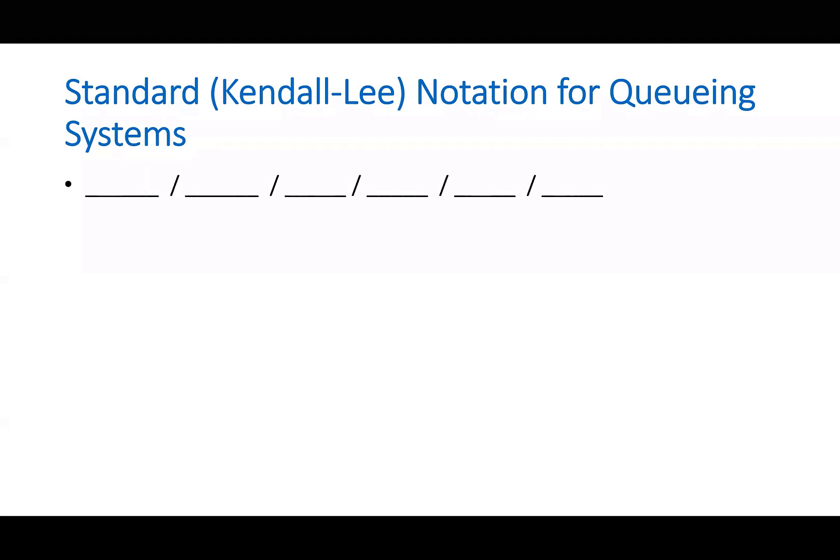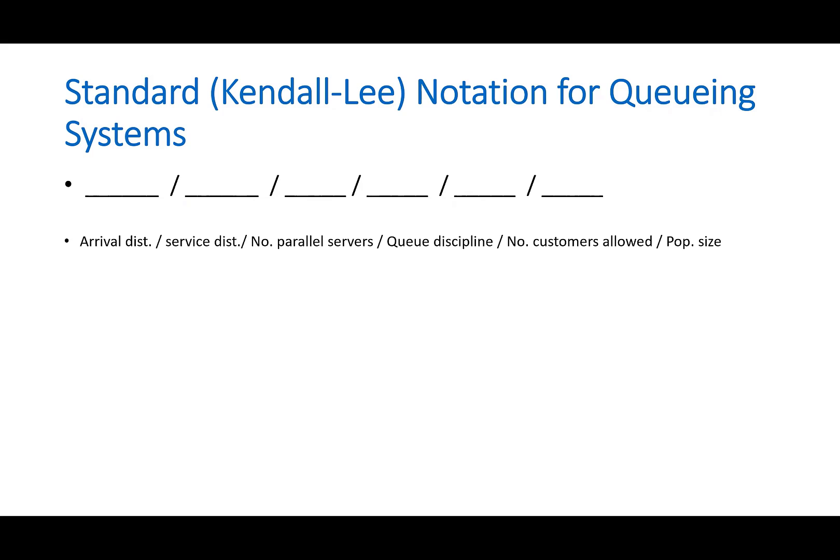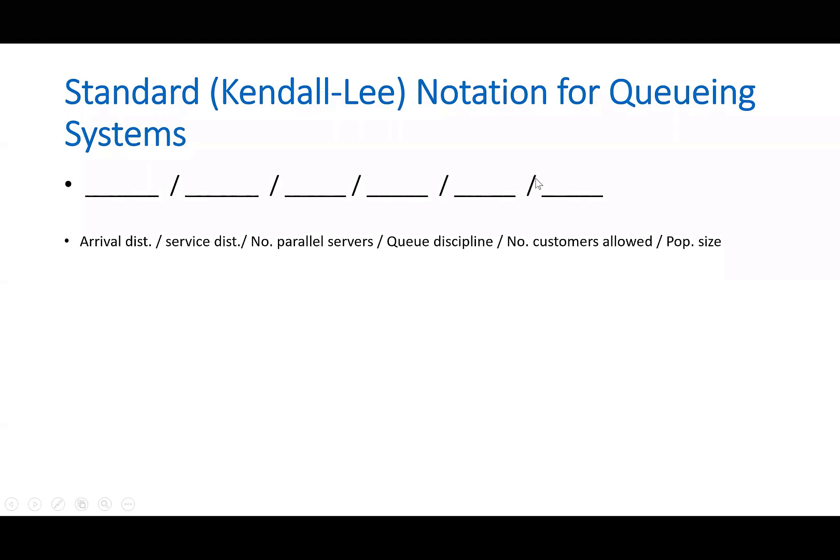Now that we learned about Poisson arrival process, we can talk about the notations. How do we show, how do we characterize a queueing system? We characterize a queueing system with six characters.